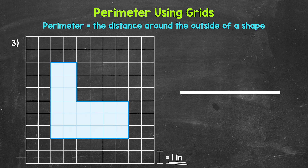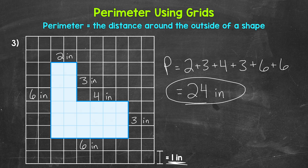Let's see what we have for the perimeter — you can check your answer. For number three, the perimeter is 24 inches. Keep in mind, if you added the side lengths in a different order than I did, that's perfectly fine. As long as we get that perimeter of 24 inches, we just need to make sure that all of the side lengths are included. There's how to find the perimeter of a composite figure using grids and adding all of the side lengths.